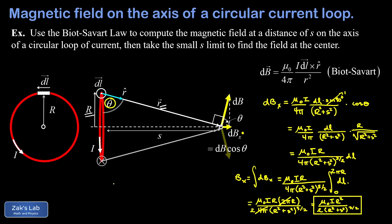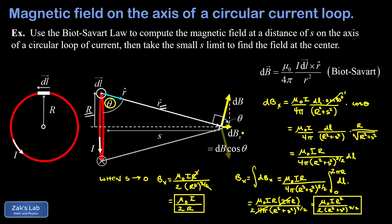A natural limiting case is when s goes to zero — traveling to the center of the ring. The s in the denominator vanishes, leaving R squared to the three-halves, which is just R cubed. Canceling two factors of R leaves a single R in the denominator, giving the useful formula for the magnetic field at the center of a ring: B equals mu-naught I over 2R. In the next video we'll use the Biot-Savart law to directly compute the field at the center and verify it agrees with this limiting result.